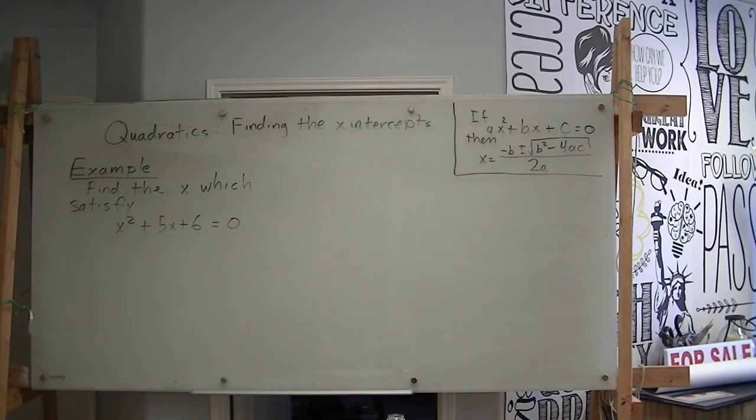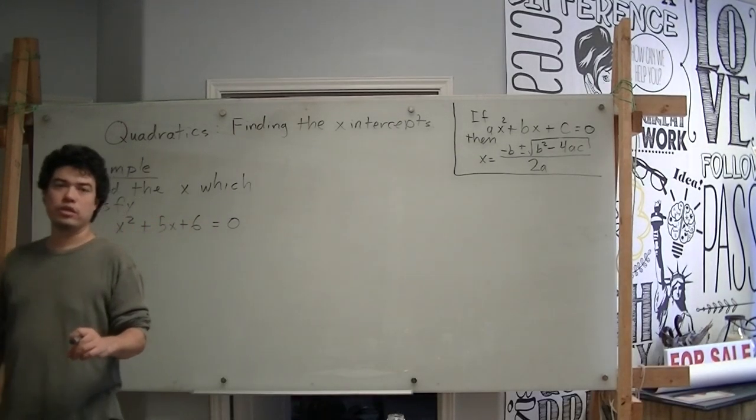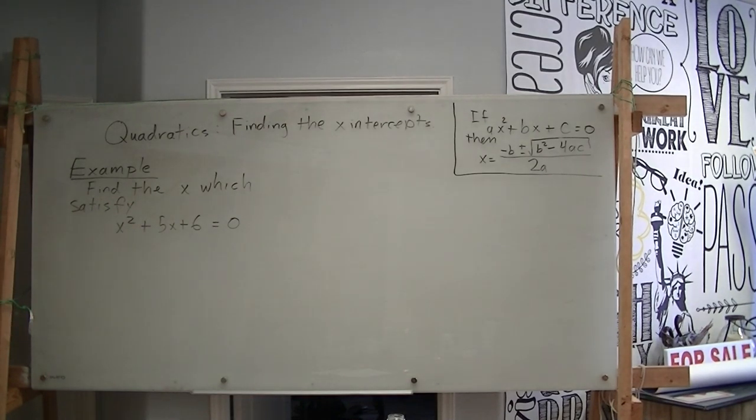And so here's our first example. We're going to find x such that x squared plus 5x plus 6 equals 0. That is to say, now we're going to find the xs that would be the x-intercepts if we were to graph this parabola.